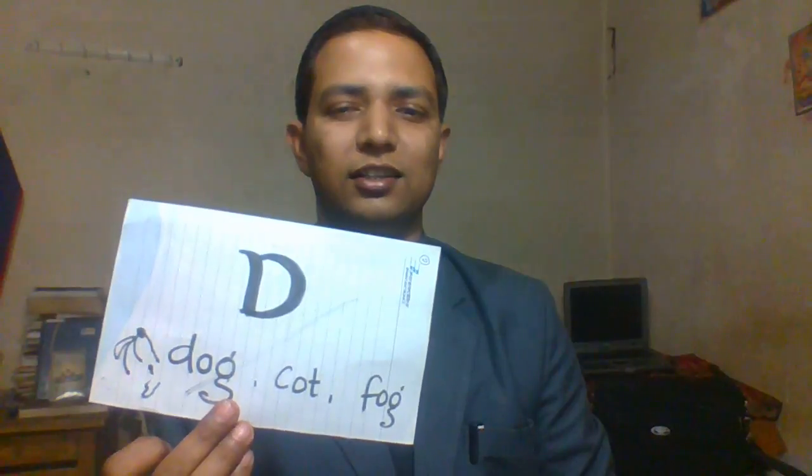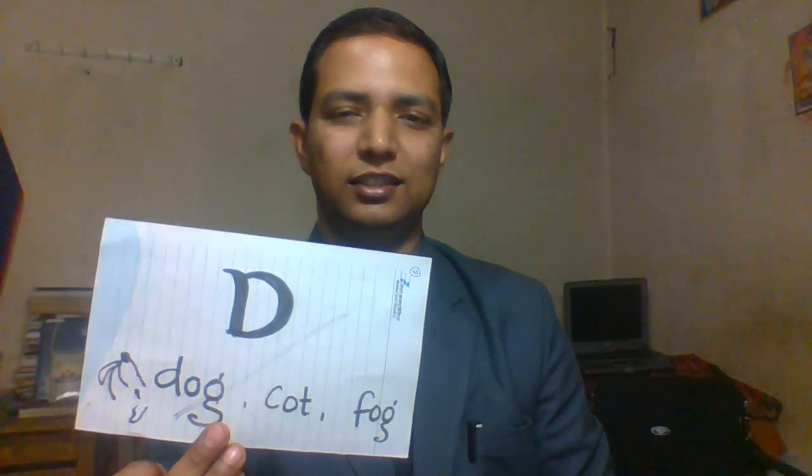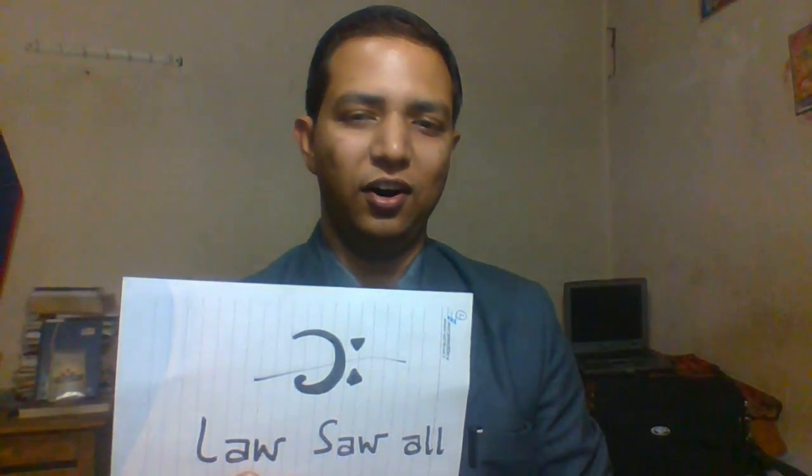Next sound is the broad A — recognize this symbol — that is in pass and bath. Next sound is the short O, as in dog, caught, and fog. Next vowel sound is the longer O sound, as in saw and all.